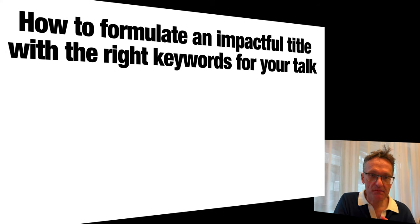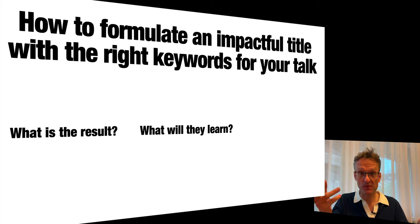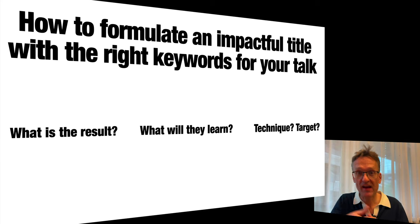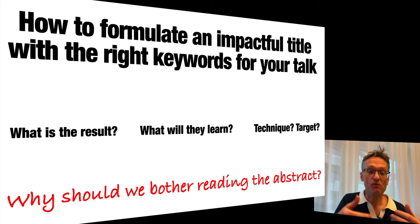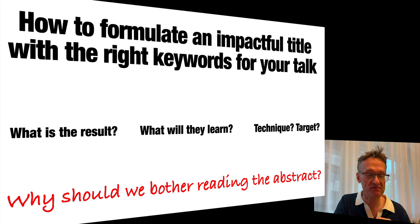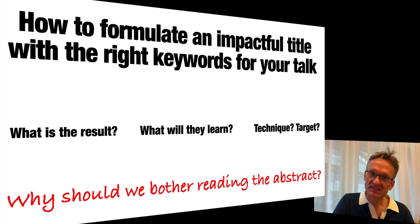Titles have to be impactful and you need the right keywords. You likely want to quickly tell them what the main result was, what they'll learn from your poster, whether there's a take-home message, any particular technique or target organism like E. coli if that's relevant, and something unexpected. Basically — why should they bother reading your full introduction or abstract? If everything in your poster sounds obvious and expected, why should they spend more time on it?